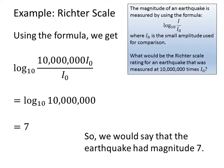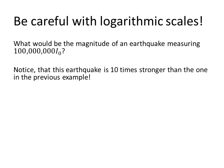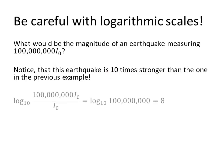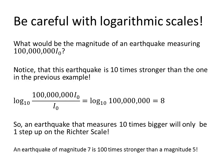So we would say that this earthquake has a magnitude of 7. What would be the magnitude of an earthquake measuring a hundred million times I₀? Notice that this earthquake is ten times stronger than the one in the previous example. Doing our calculation, we can see that this earthquake measures with a magnitude of 8. So an earthquake that measures ten times bigger will only be one step higher on the Richter scale. This is something you have to be careful of when dealing with logarithmic scales. For example, an earthquake of magnitude 7 is a hundred times stronger than magnitude 5 — any time you take one step on the scale, you have to multiply by 10. So taking two steps, say from 5 to 7, you multiply by 10 times 10, which is 100.